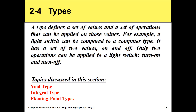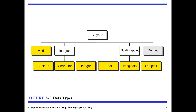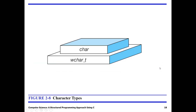We have here the following subtopics: void, integral, and floating point types. Under the integral type, we have three: boolean, character, and integer. For the floating point, we have real, imaginary, and complex. For the character types, we have char and wchar_t.